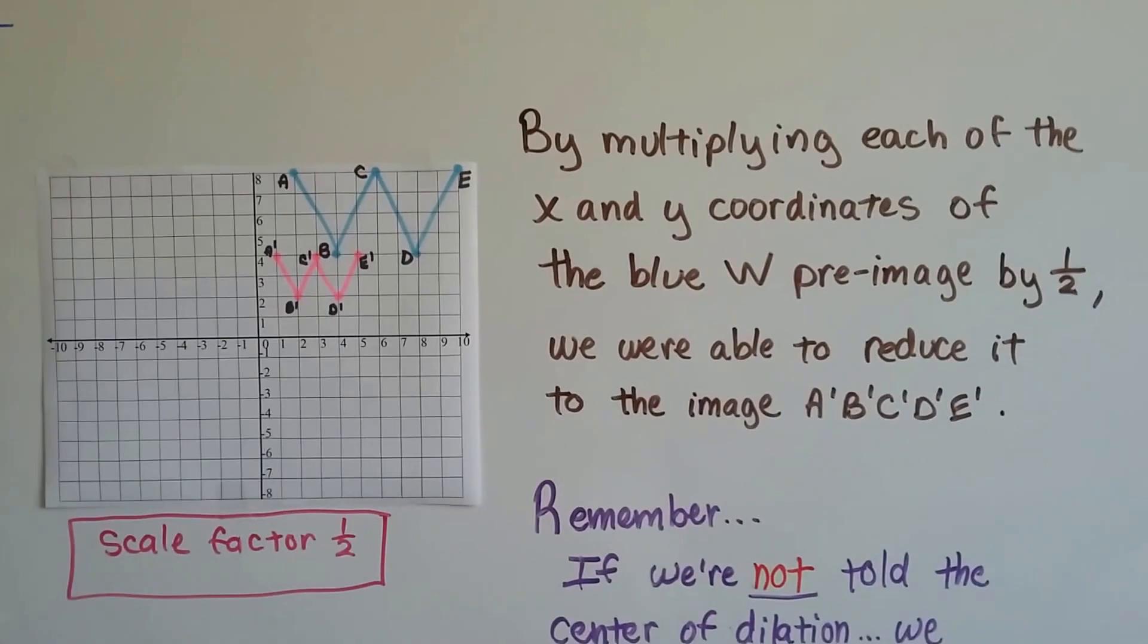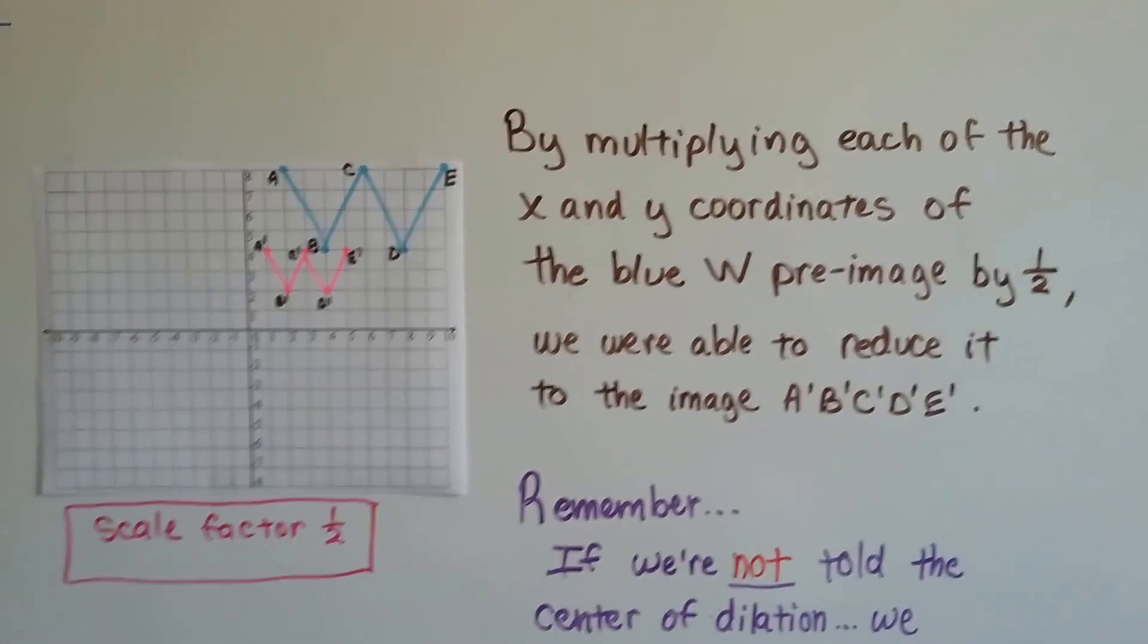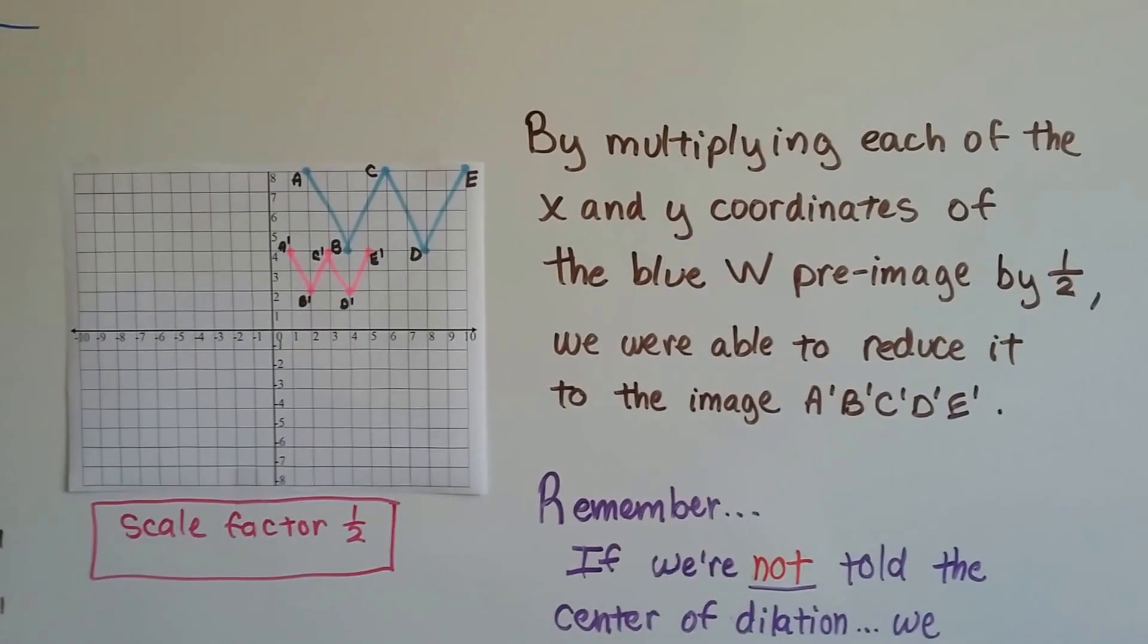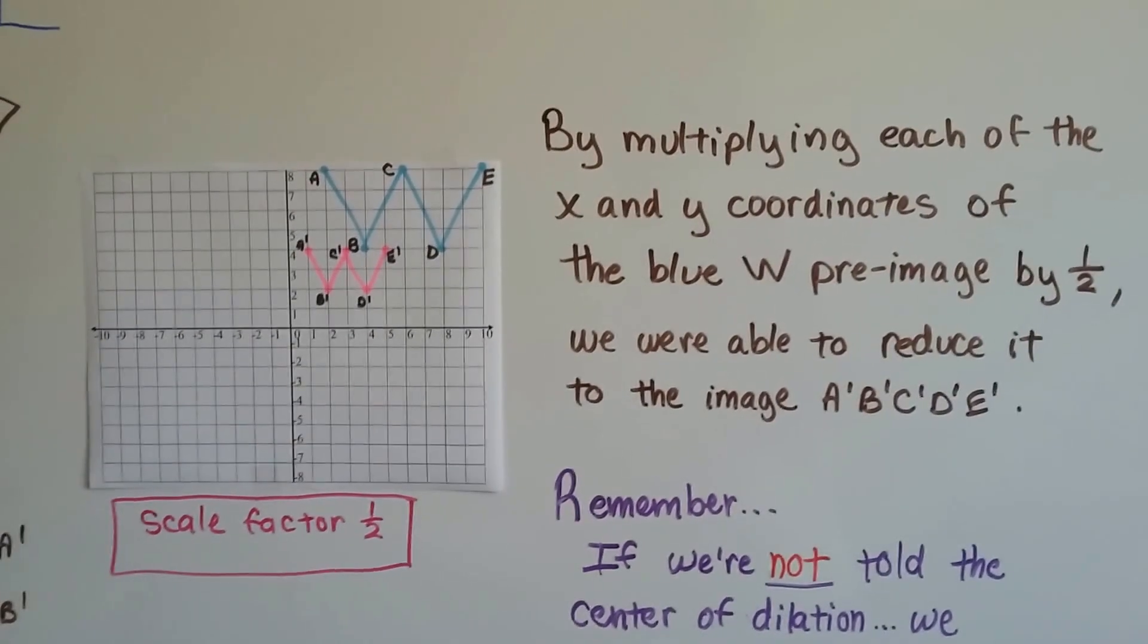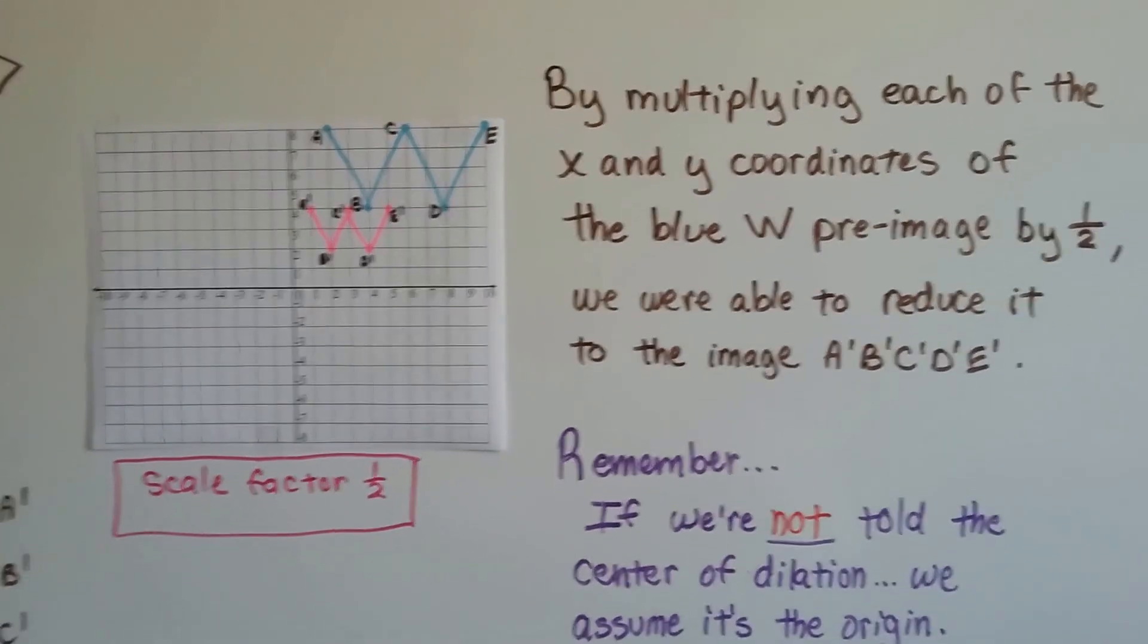By multiplying each of the x and y coordinates of the blue W pre-image by a half, we were able to reduce it. It went through a reduction to the image A prime, B prime, C prime, D prime, E prime. And they're open.